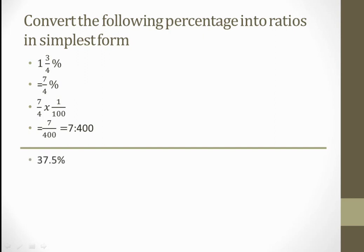Next question: 3.75 percent. Again I divide by 100 to remove the percent sign, giving 3.75 over 100, which is 37.5 upon 100. Removing the decimal increases the denominator by one zero, giving 375 upon 1000. Both can be cancelled with 25, giving 15 over 40. These can be cancelled again with 5, giving 3 over 8. In ratio form: 3 is to 8. This is our required answer.